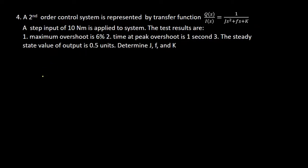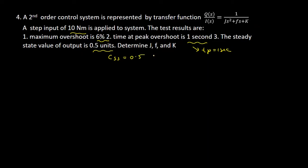We have already solved three numericals related to second order control systems. In this lecture we are going to solve the fourth numerical. The question is: a second order control system is represented by transfer function Q(s)/I(s) = 1/(Js² + fs + K). A step input of 10 Nm is applied to the system. The test results are: maximum overshoot is 6%, time at peak overshoot (tp) is 1 second, and the steady state value of output (css) is 0.5 units. We have to determine the values of J, f, and K.